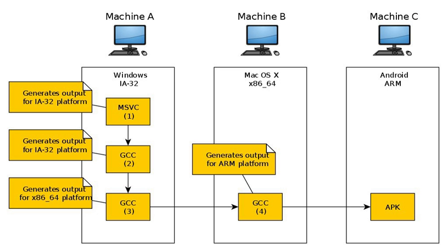The Autotools packages use the notion of a build platform, a host platform, and a target platform. The build platform is where the compiler is actually compiled. In most cases, build should be left undefined. The host platform is where the output artifacts from the compiler will be executed. The target platform is used when cross-compiling cross-compilers, representing what type of object code the package itself will produce; otherwise the target platform setting is irrelevant. For example, consider cross-compiling a video game that will run on a Dreamcast — the machine where the game is compiled is the build platform while the Dreamcast is the host platform.